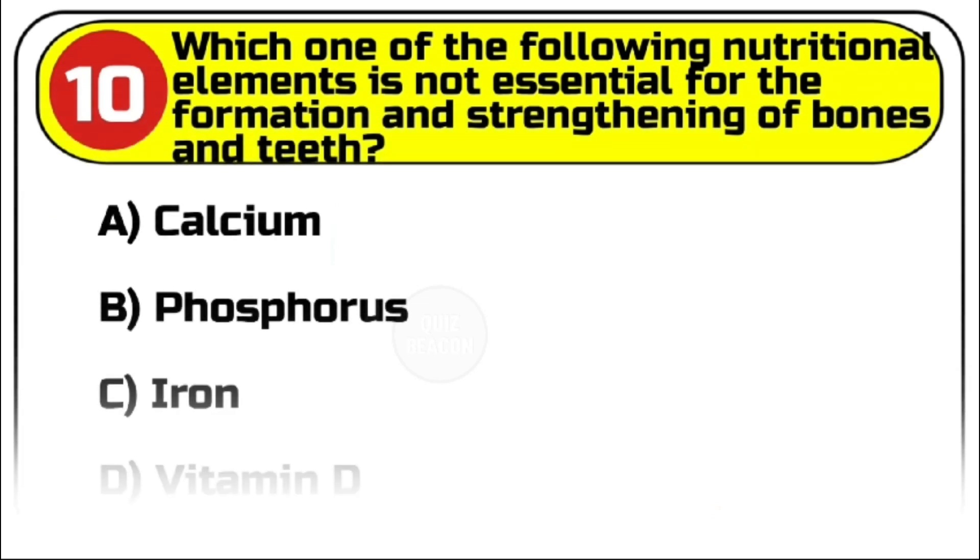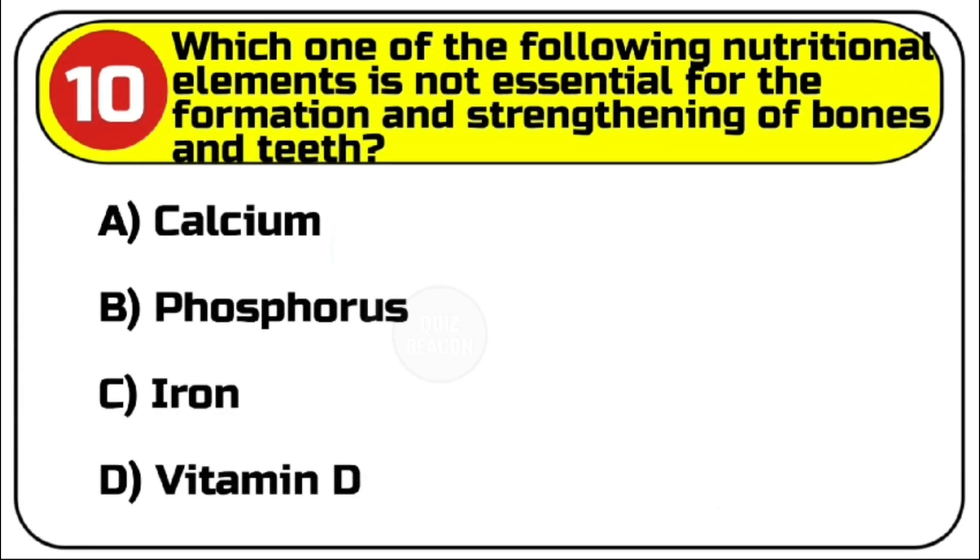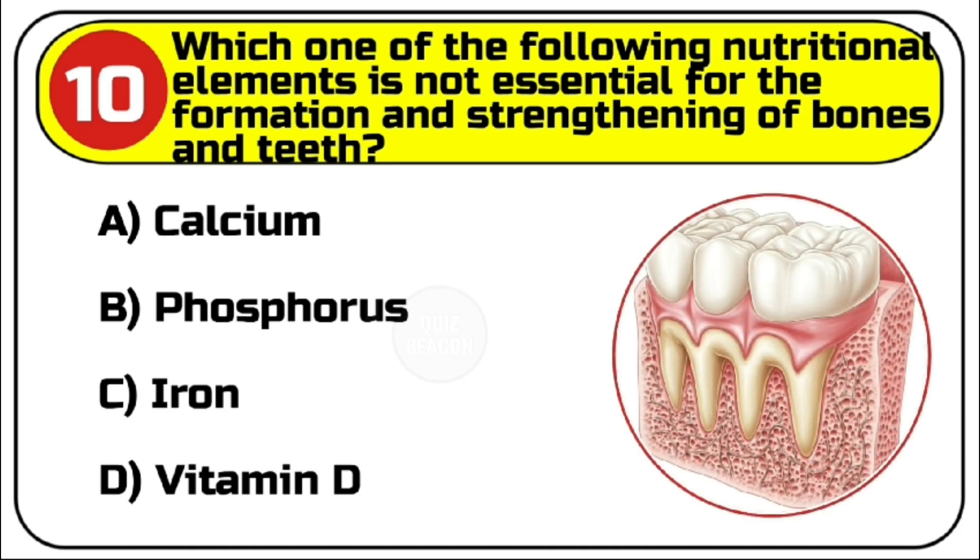Question number 10. Which one of the following nutritional elements is not essential for the formation and strengthening of bones and teeth? Options are A. Calcium. B. Phosphorus. C. Iron. D. Vitamin D.